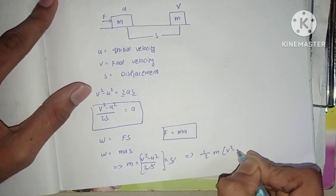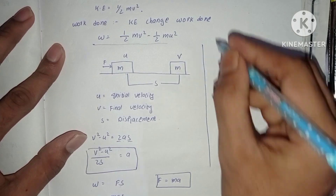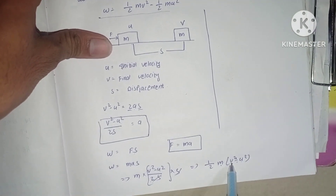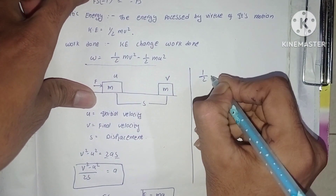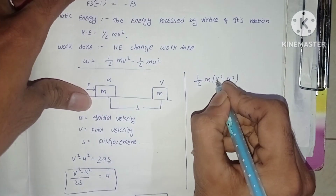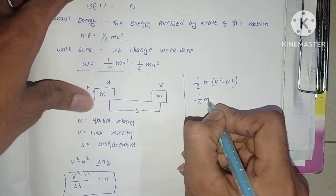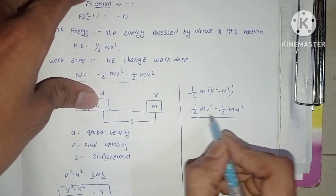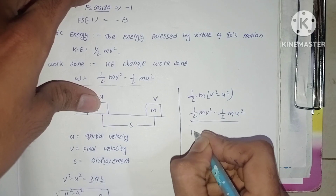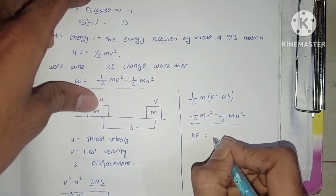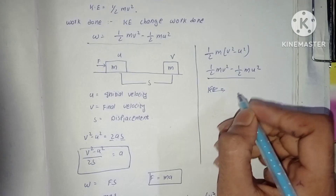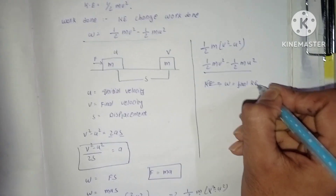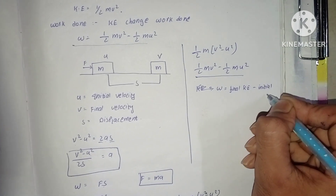Expanding the expression: W = ½mv² − ½mu². Therefore, work done equals final kinetic energy minus initial kinetic energy, which proves the work-energy theorem.